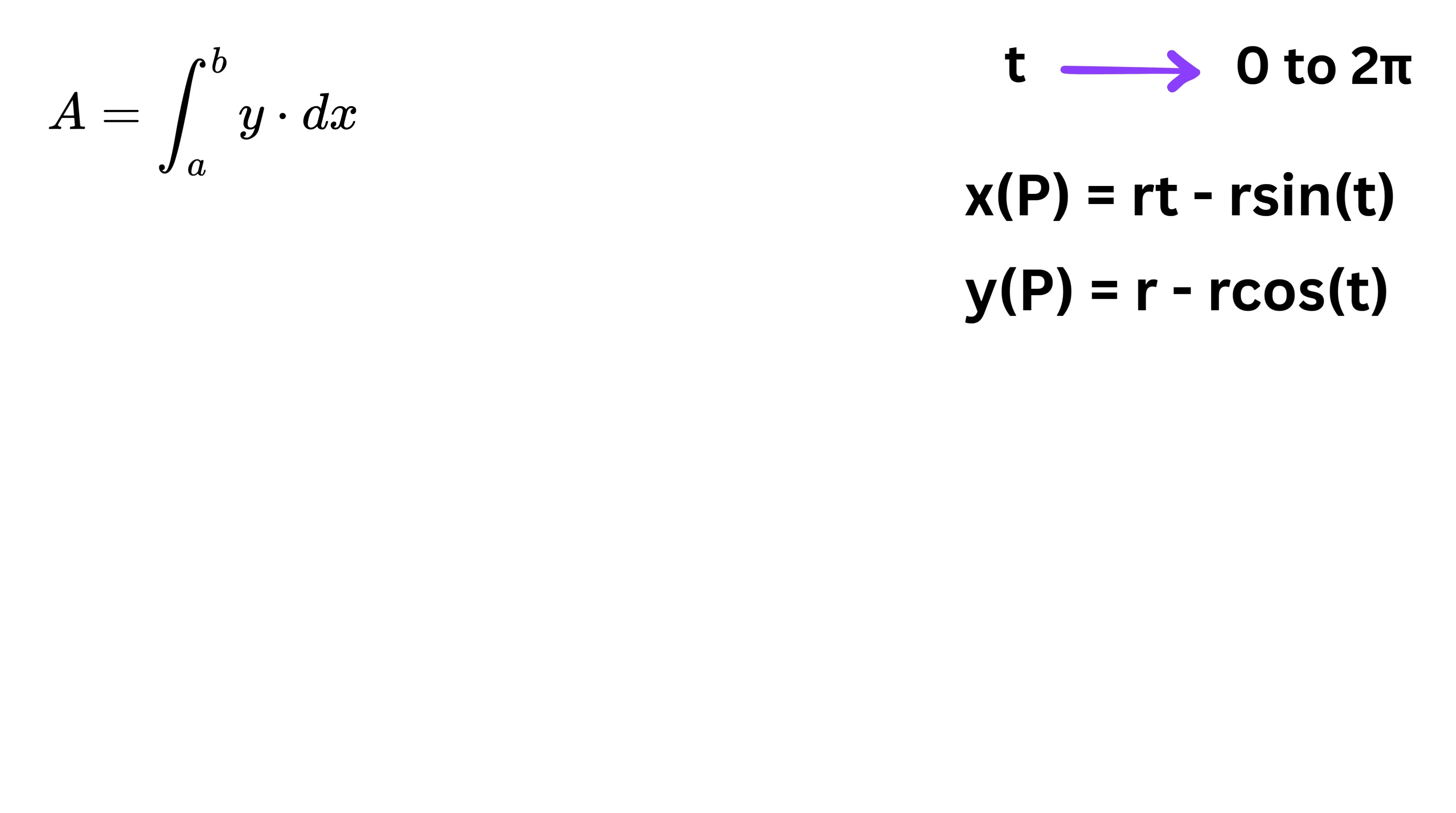Now how to find this area? We have both x and y in terms of T, so somehow we need to convert this area equals integral of y times dx into parametric form. But how to do it?